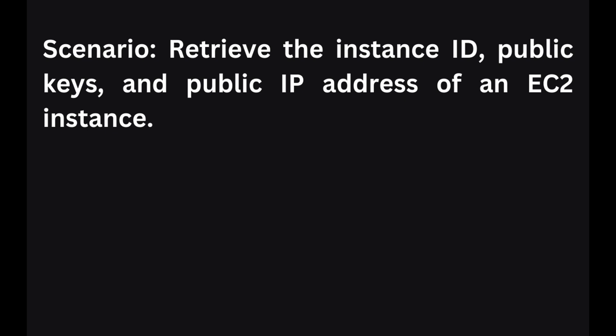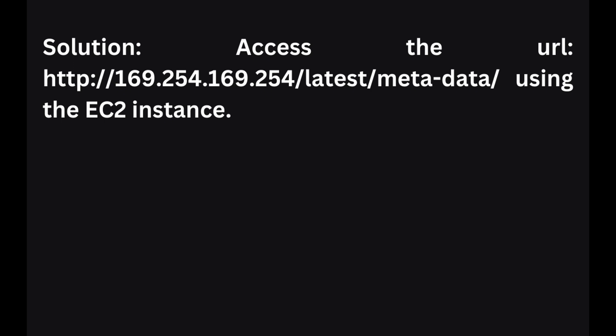In the next scenario, you want to retrieve the instance ID, public keys, and private IP address of an EC2 instance. This is a widely asked interview question. To retrieve this information, you can use the magic IP address URL: 169.254.169.254/latest/metadata. Log in to the EC2 instance, type that URL, and you will be able to see all the details.